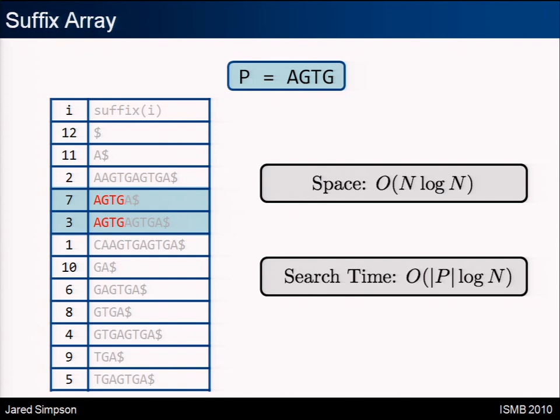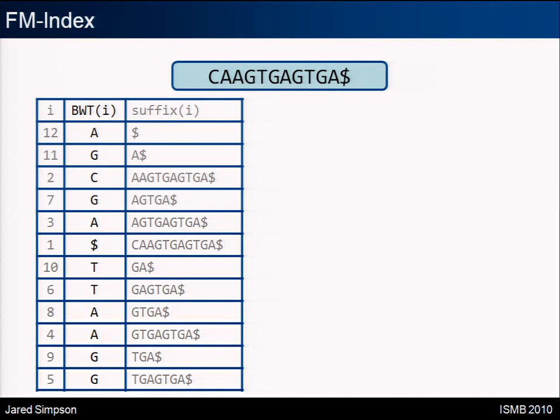For a lot of sequence data — say a set — a sequence of numbers would be about eight bits for every input base, which would be in the range of a few hundred gigabytes. So we need a more space-efficient way to search. The FM index comes in using the Burrows-Wheeler transform. We add the BWT string — this is the character that precedes each suffix. So the character for the lowest dollar is A, and that gives us the BWT string.